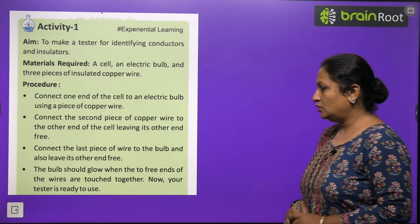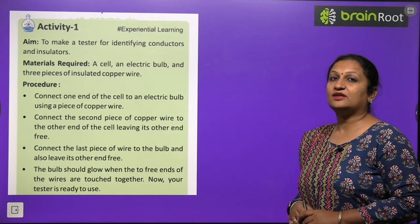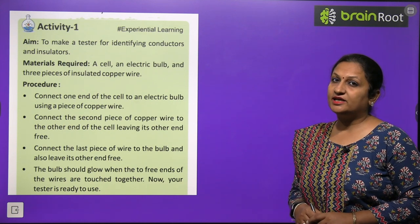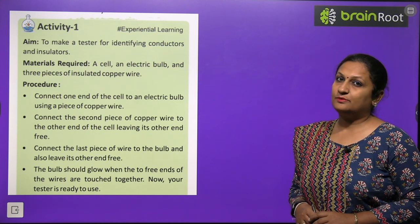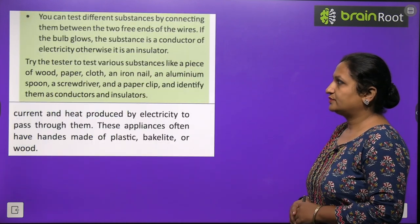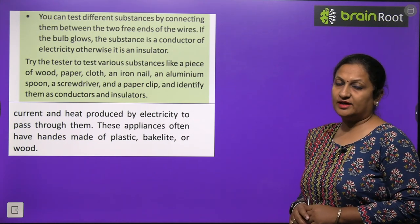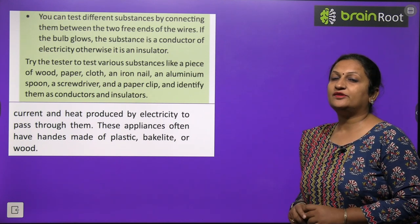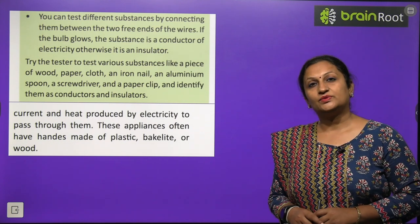The bulb should glow when the two free ends of the wires are touched together. When we touch both wire ends, we complete the circuit, and electric current flows, causing the bulb to glow. Now the tester is ready to use. You can test different substances by connecting them between the two free ends of the wire to check whether they are conductors or insulators.